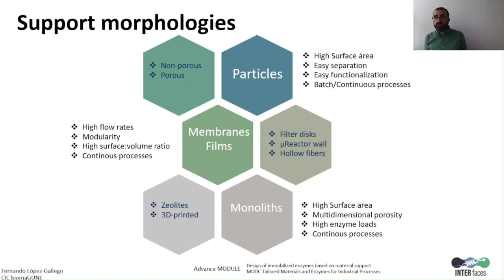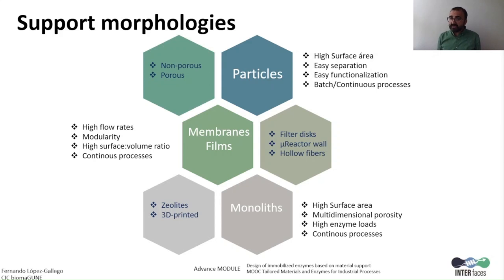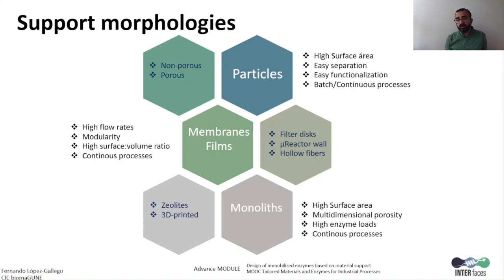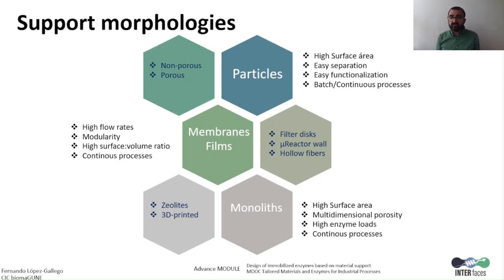Finally, the third morphology is the monolith. Monoliths can be ceramics, like cordierites formed through a sintering process, but also they can be organic. Organic monoliths are nowadays undergoing a revolution with the integration of 3D printing technologies, also called additive fabrication. Monoliths can present a very high surface area, so we can create multidimensional porosity, which allows us to load high enzyme amounts and implement them for continuous processes.